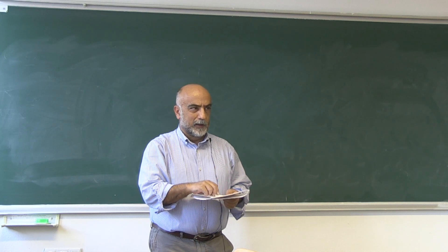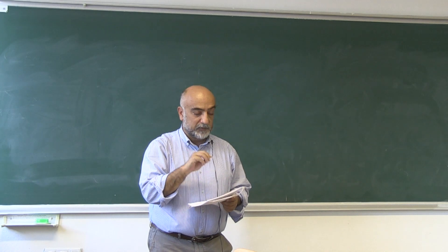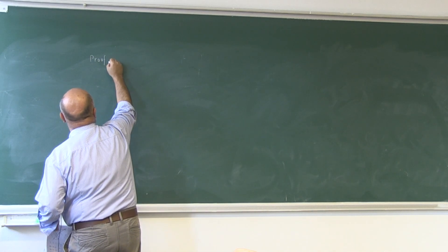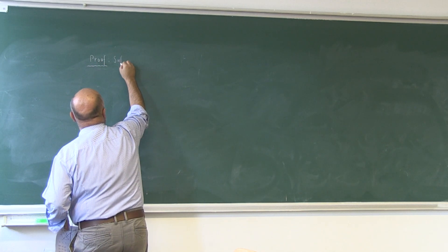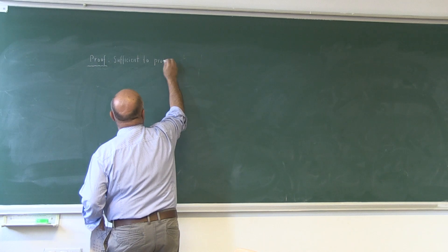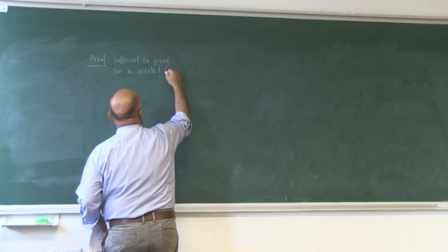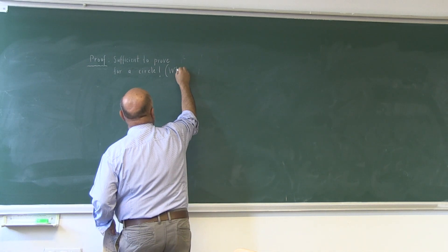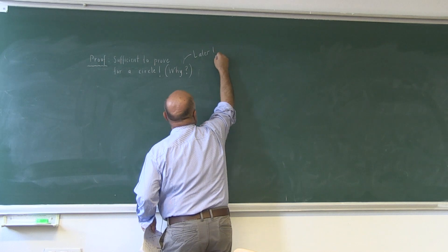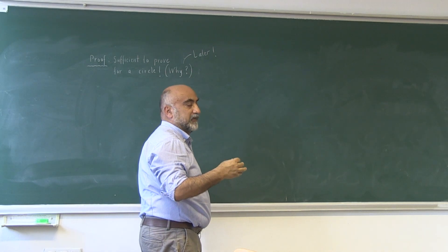I will leave it as an open question why it will be sufficient to do it for a circle — I shall come back to the subject. The proof is sufficient to prove for a circle. Let's note the open question: why? This question will be fully answered later. It's not too difficult if you think a little bit about what exactly a conic section is.